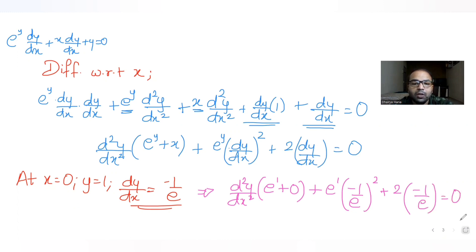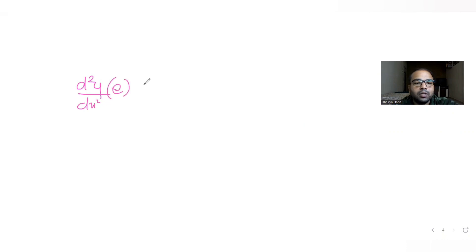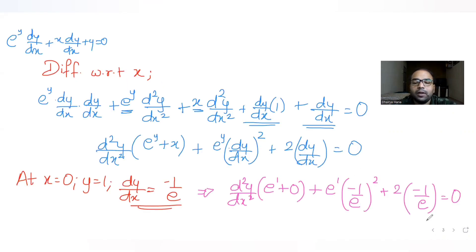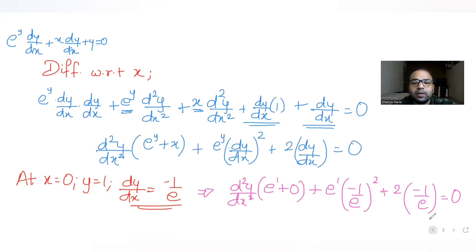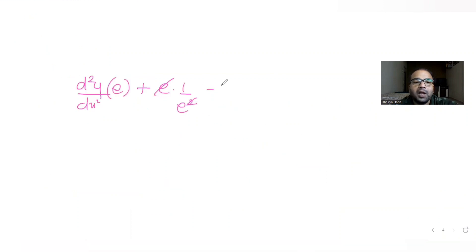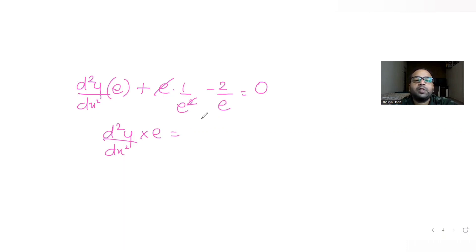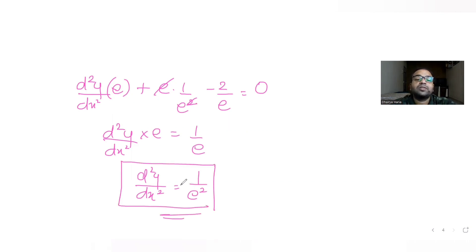Simplifying: e·(d²y/dx²) + 1/e − 2/e = 0, so e·(d²y/dx²) − 1/e = 0, giving e·(d²y/dx²) = 1/e. Therefore, d²y/dx² = 1/e².